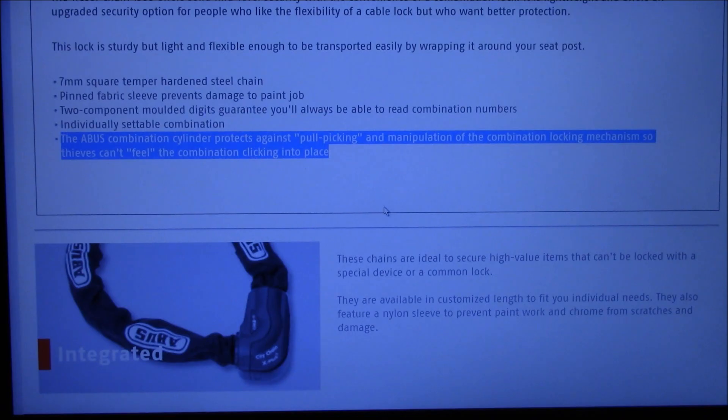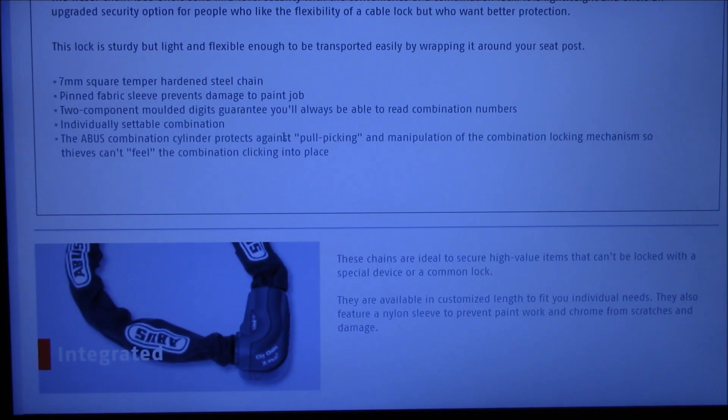The interesting part comes here, because they say the Abus combination cylinder protects against pole picking and manipulation of the combination locking mechanism, so thieves can't feel the combination clicking into place. That's true. I still don't know yet why this lock is actually open now. Was it just pure luck or a little bit of intuition and feeling?